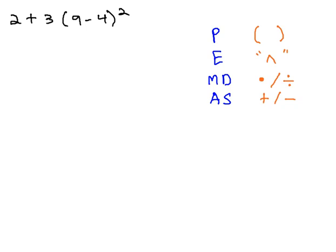As we look at this problem, 2 plus 3 times the quantity 9 minus 4 squared, we need to first start with the parentheses. Inside the parentheses, we need to simplify that 9 minus 4 first.